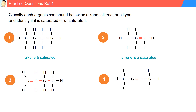Question three: there are four carbon atoms. Between the first two carbons there is a double bond, while between the other carbon atoms there are single bonds. Since there is a double bond, the substance can be classified as an alkene, and alkenes are unsaturated. Question four: there are four carbon atoms. Between two carbon atoms there is a single bond, between another two there is a triple bond, and between the final two there is a single bond. Since there is a triple bond, the molecule can be classified as an alkyne, and alkynes are unsaturated.